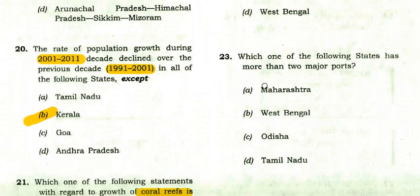Which one of the following states has more than two major ports? The right option is Tamil Nadu — Tamil Nadu has more than two major ports.